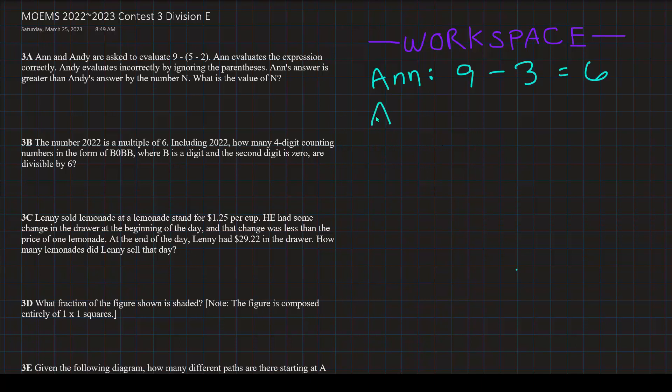Then it's Andy's answer. What did Andy get? Well, Andy did not follow this rule by ignoring the parentheses. Which means that he did it like 9 minus 5 minus 2, which is equal to 4 minus 2, which is equal to 2. So Ann's answer is 6 and Andy's answer is 2. The number n is the difference between these two numbers. So 6 minus 2 is equal to 4. So n is equal to 4.